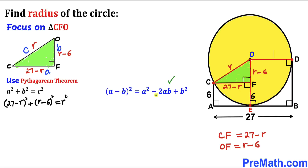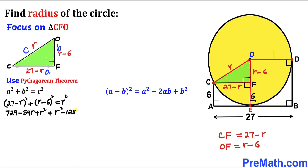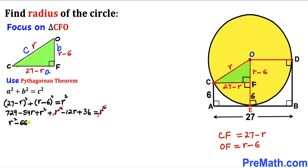Recalling the identity (a − b)² = a² − 2ab + b², we expand both binomials: (27 − r)² = 729 − 54r + r², and (r − 6)² = r² − 12r + 36. So we have 729 − 54r + r² + r² − 12r + 36 = r². The r² terms simplify, and combining like terms on the left gives us r² − 66r + 765 = 0.